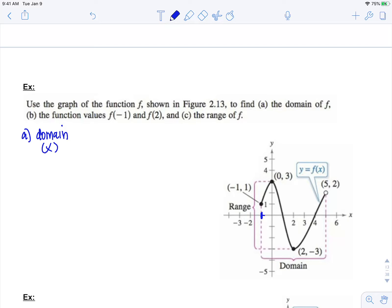and it goes all the way over to here. But if we notice, it's a closed circle here, so it includes this x value. And an open circle here, so it does not include this x value. So the domain for f in interval notation would be from negative 1, that's where it starts including, all the way over to 5, but not including that value because of the open circle.